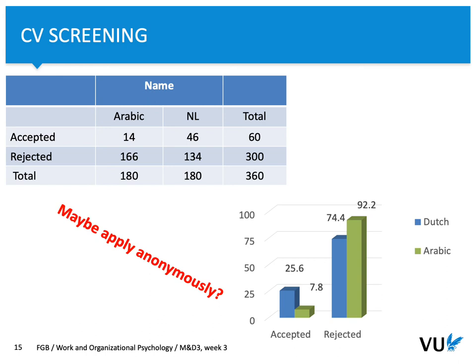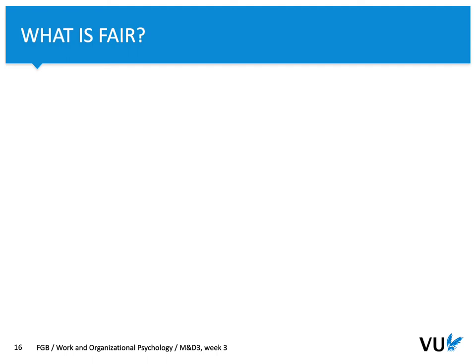Since we see differences in who is selected depending on name, maybe we can suggest that candidates should apply anonymously — without disclosing their first or last name. Do you think that makes sense?